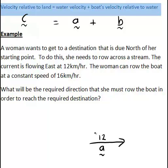And we know the woman wants to go to a destination that is due north. That is, she wants to actually end up with the boat relative to land going north, so that is vector c. The woman can row the boat at a constant speed of 16 kilometres per hour. So that 16 is the speed of the boat relative to water, which relates to the magnitude of vector b. But we don't have vector b on our diagram yet.